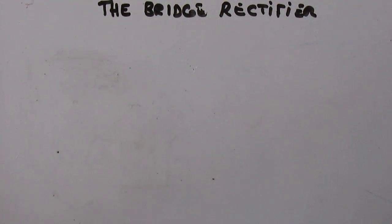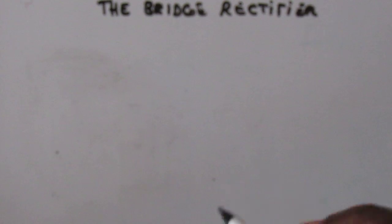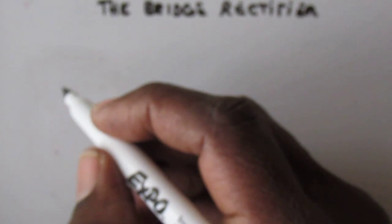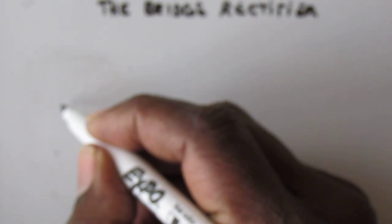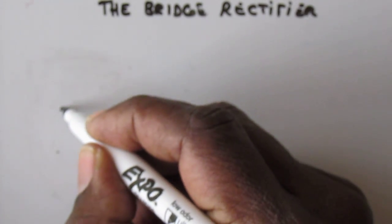In this lesson I will draw the circuit for a bridge rectifier and explain its operation. I recommend that you draw the circuit for a bridge rectifier by drawing a rectangle on its side like a diamond.